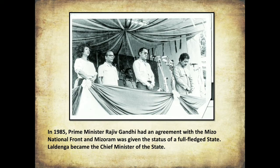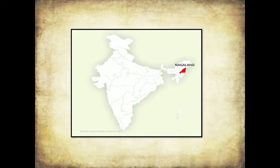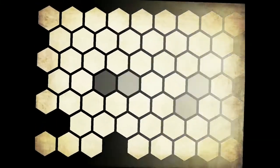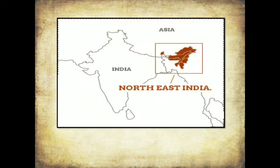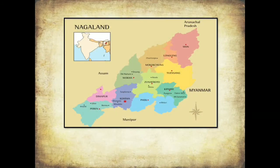Let us now discuss Nagaland. The Naga tribe of Northeast India is known as a martial tribe. They had settled in the Eastern Himalayas, Naga Hills, and border areas of Assam and Myanmar. Looking at the map, one can identify and understand the geographical spread of the Naga territory.